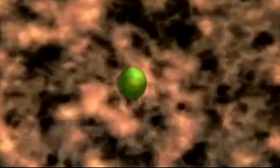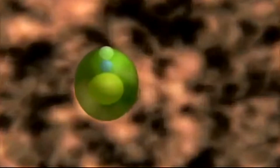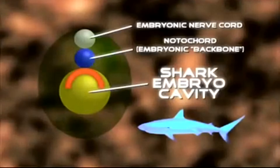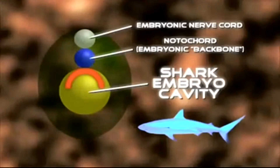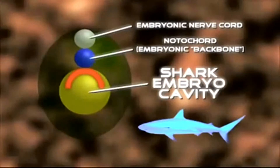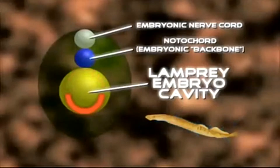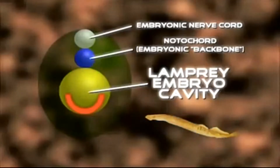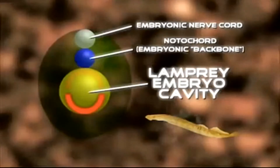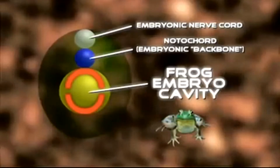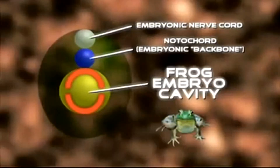We know that in different vertebrates the gut is constructed in very different ways during development. In sharks, the gut develops from cells in the roof of the embryonic cavity. In lampreys, the gut develops from cells on the floor of the embryonic cavity. And in frogs, the gut develops from cells in both the roof and the floor.